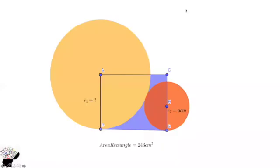Welcome to my YouTube channel. My name is Edwin Wallace. The problem: you have two circles — a bigger circle and a smaller circle touching each other, intersected by a rectangle. The area of the rectangle is provided and the radius of the smaller circle is also provided. You are supposed to find the radius of the bigger circle. Can you figure out the solution?